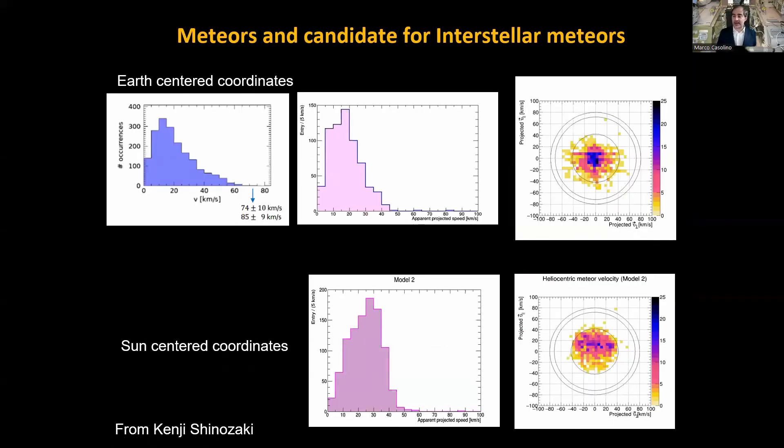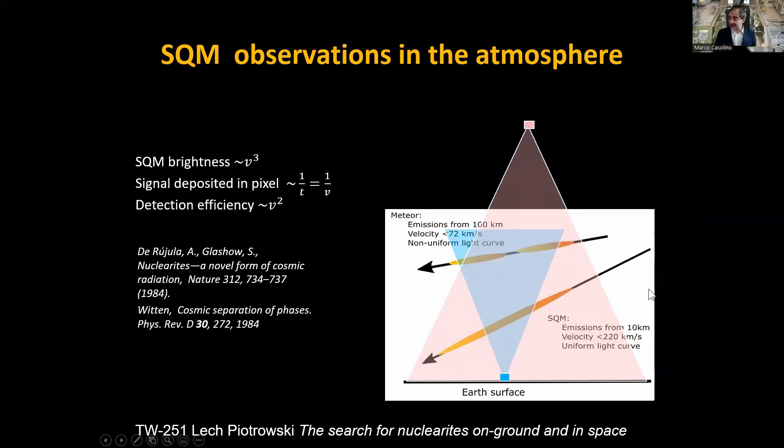One work that Kenji Shinozaki is doing is converting this from Earth-centered coordinates to Sun-centered coordinates, to remove the orbit of the Earth from the equation. What happens is that all the meteors come at this heliocentric velocity below 72-75 kilometers per second. We have one nice candidate of interstellar meteor. We have to look in very big detail, but still it's very nice. This is a 10% sample, so it's still a very small sample, that we have at least a candidate.